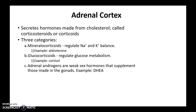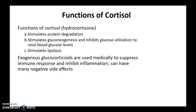This slide summarizes what we just covered: the adrenal cortex secretes corticosteroids derived from cholesterol — three types: mineralocorticoids, glucocorticoids, and adrenal androgens. Functions of cortisol include stimulation of protein degradation, gluconeogenesis, inhibition of glucose utilization, and stimulation of lipolysis. Additionally, exogenous glucocorticoids that are sometimes prescribed play a very important role in suppressing the immune response and inhibiting inflammation, though they can have negative side effects.